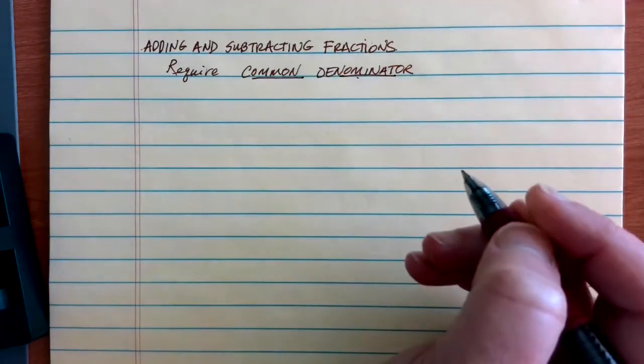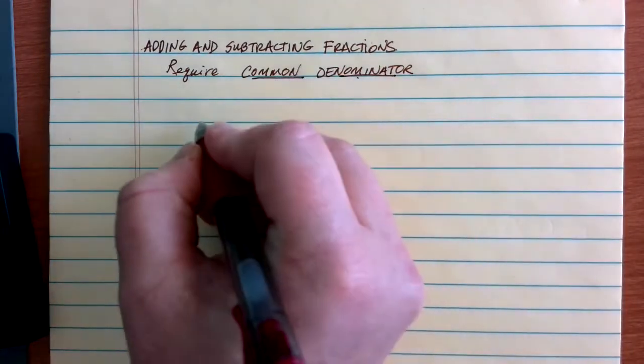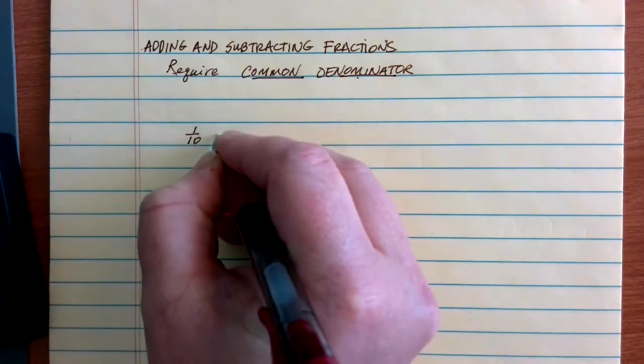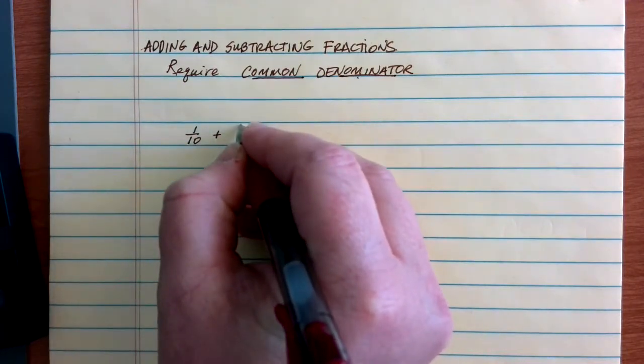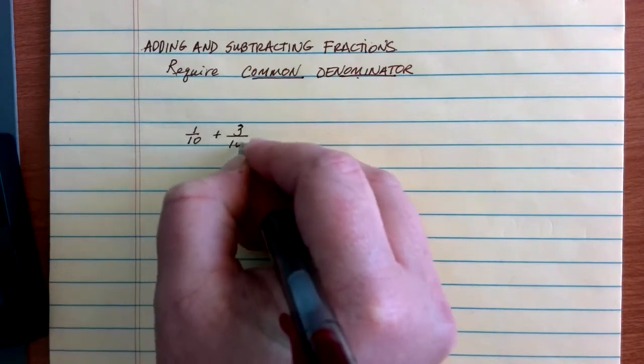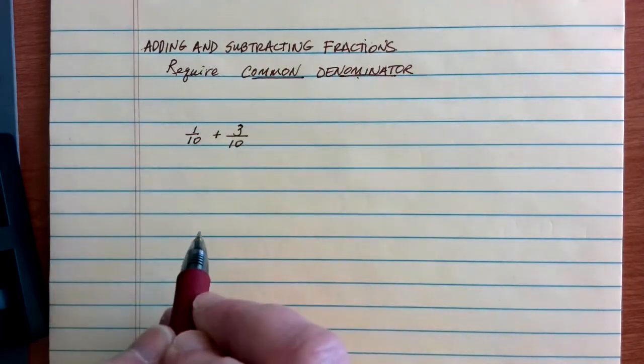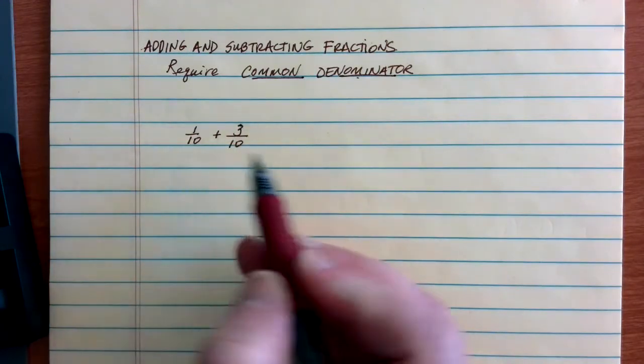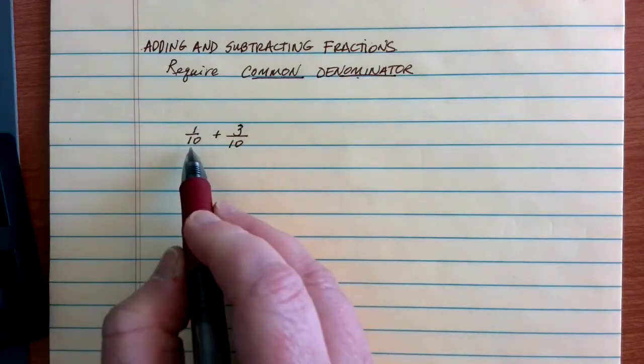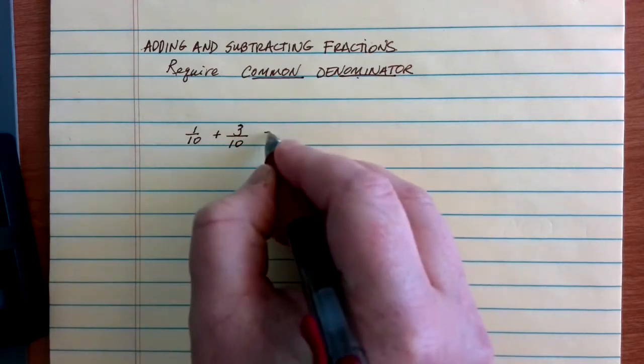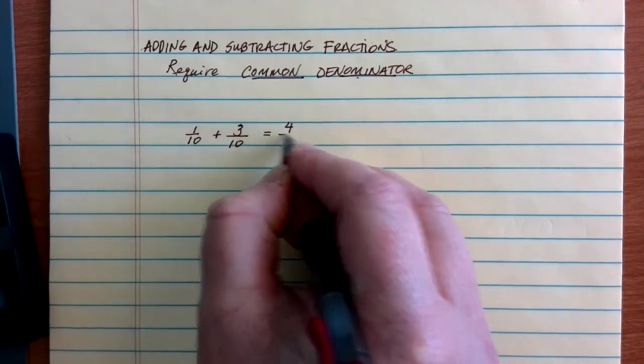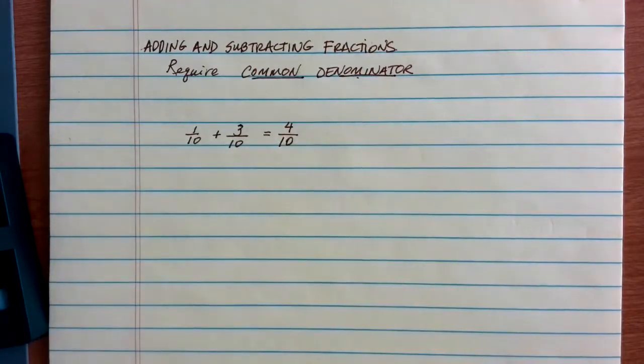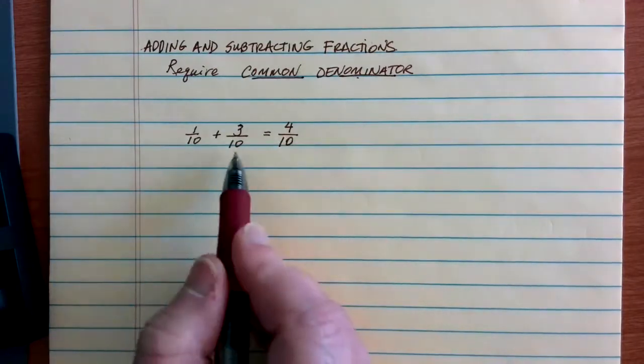Suppose for example that we have 1/10 as a fraction and we want to add this to 3/10. Notice that here our fractions have a common denominator, and we can then go ahead and add these together. If I have 1/10 and 3/10, I add the tops to get 4, but then I keep the denominator exactly the same.